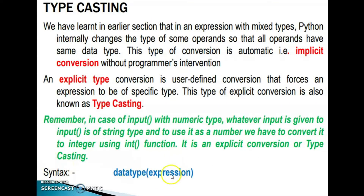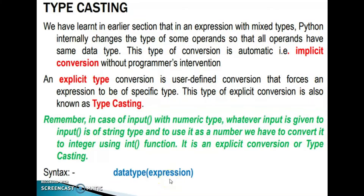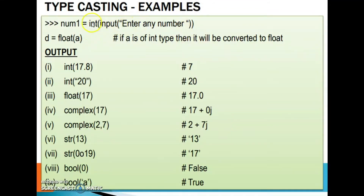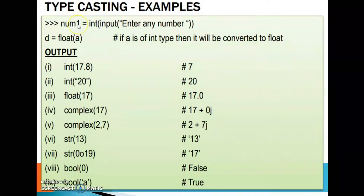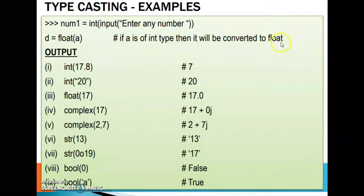The syntax for type casting is: datatype(expression). For example, num1 equals int(input('enter any number')) converts the string input to integer type. Another example: d equals float(a) — if a is an integer type, it will be converted to float type. By force, we can convert from one type to another using this syntax.